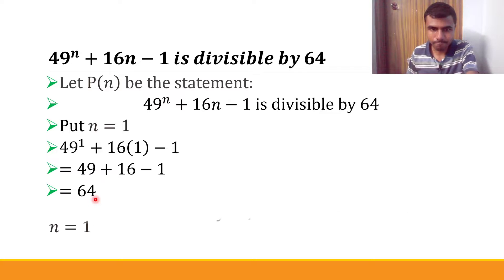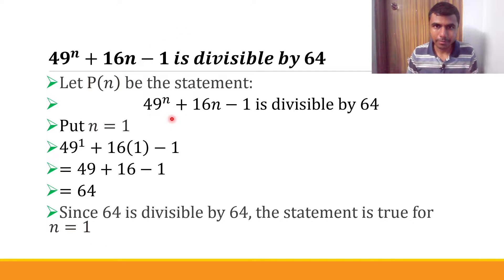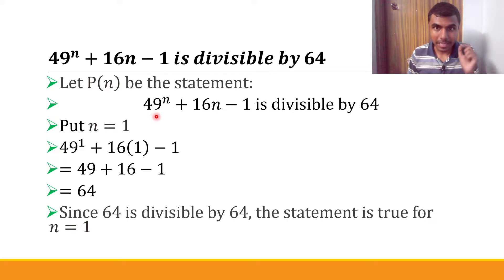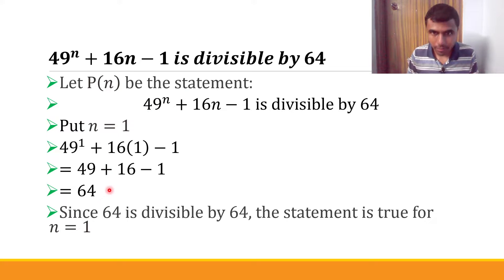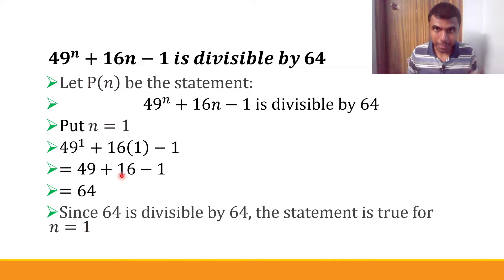Our statement says this expression should be divisible by 64. When we put n equal to 1, we got 64, and 64 is divisible by 64 — every number is divisible by itself. So this statement is true for n equal to 1. Any doubts, please put them in the comments box.